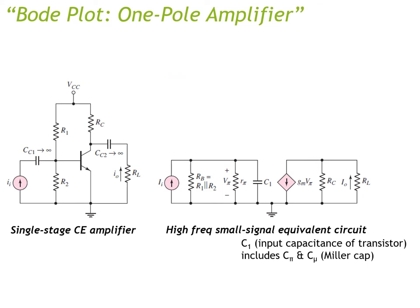In this lecture we will go through three examples and analyze the Bode plot to understand the stability issues of each: a one-pole amplifier example, a two-pole amplifier example, and a three-pole amplifier example.